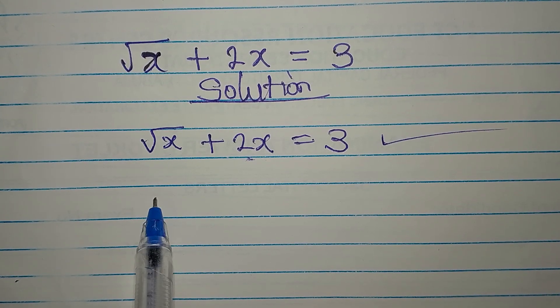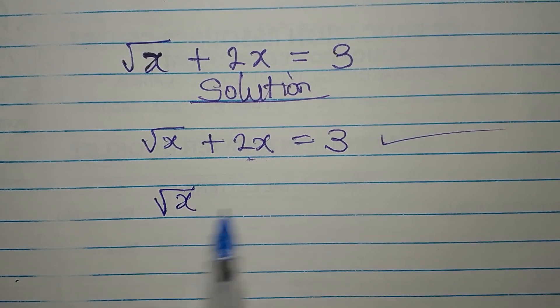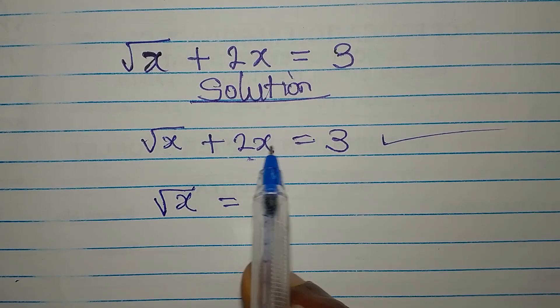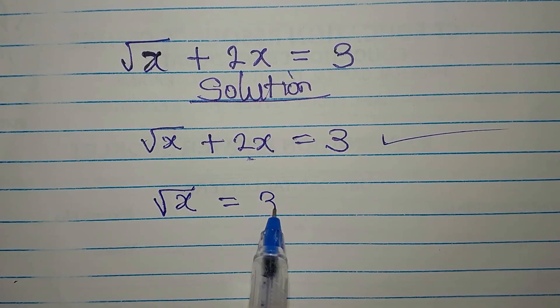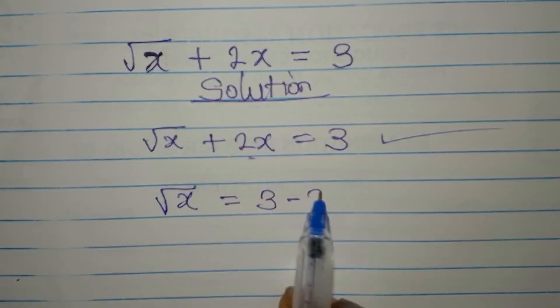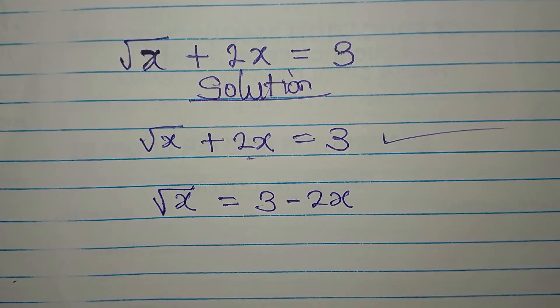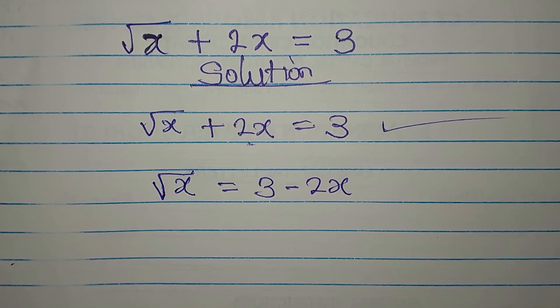Now from here, we are going to have the square root of x alone, as I want to move 2x to the other side. So I'll write square root of x equals 3 minus 2x. Taking the first step.